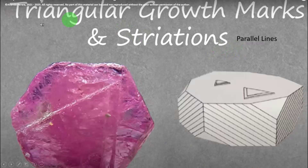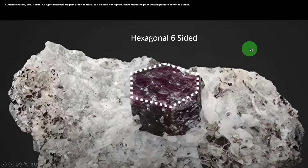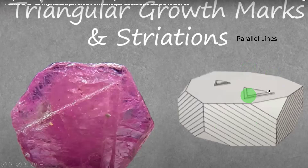When we come to here, triangular growth marks and striations are there. Striations means parallel lines. Look at the stone and the diagram — the diagram shows tabular growth, and triangles on the top in some places. These are triangular growth marks. Striations, meaning parallel lines, may be present on some of the six sides. These are the crystal behaviors. So you can identify ruby well compared to other stones.